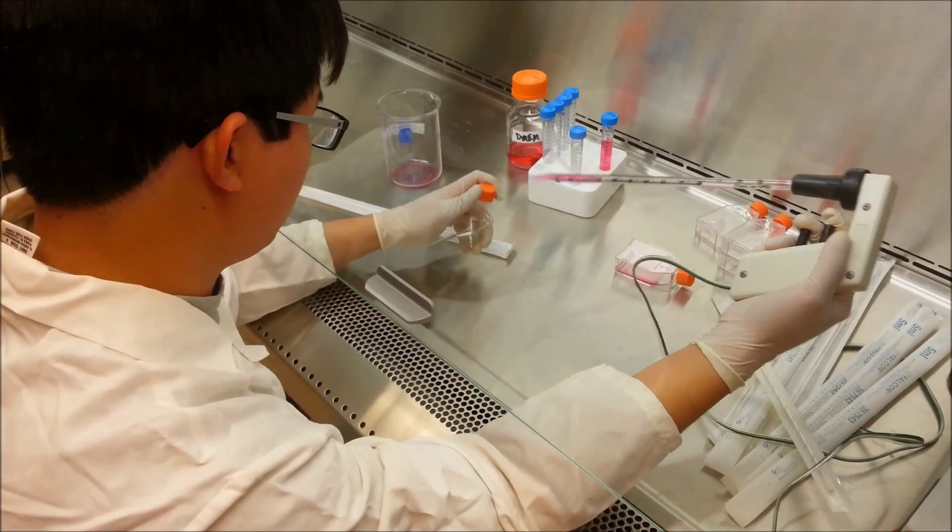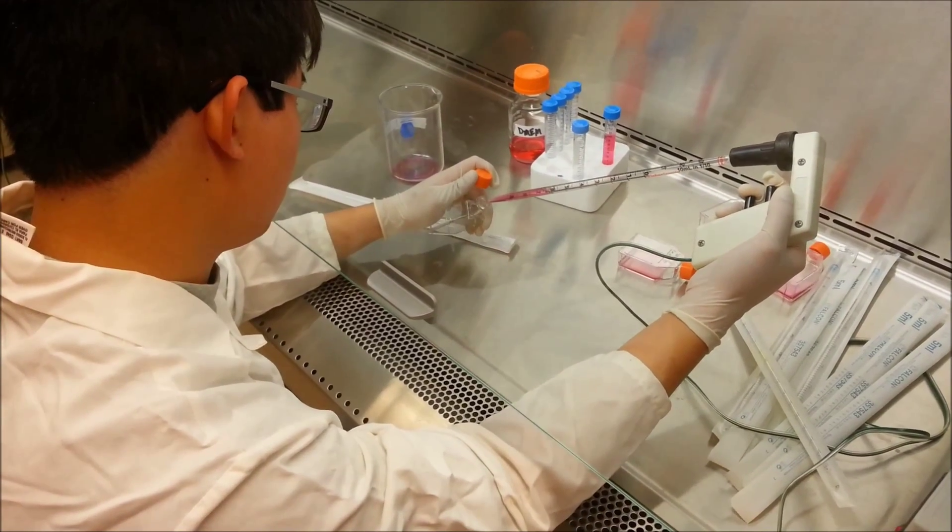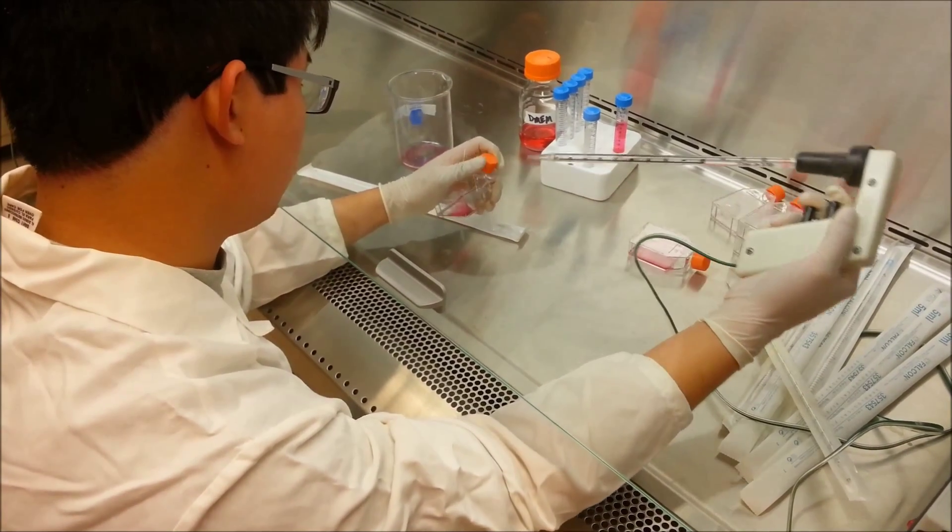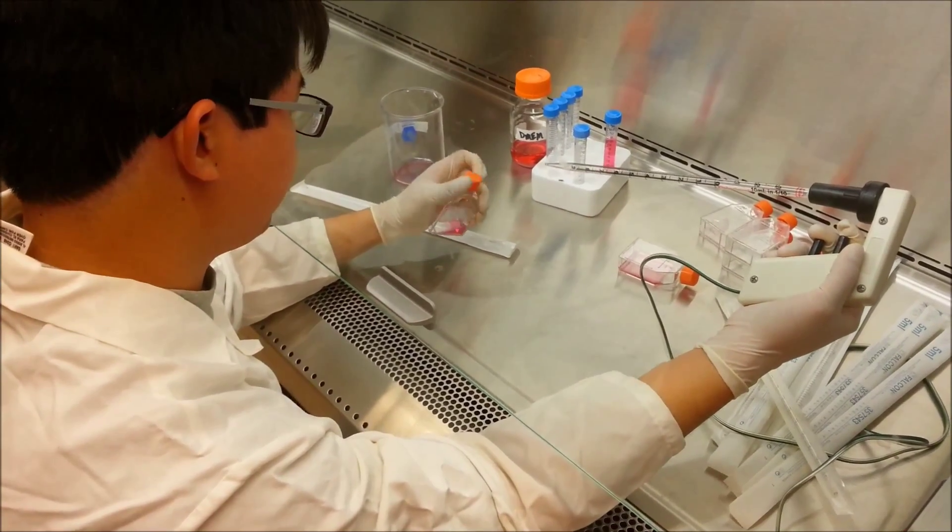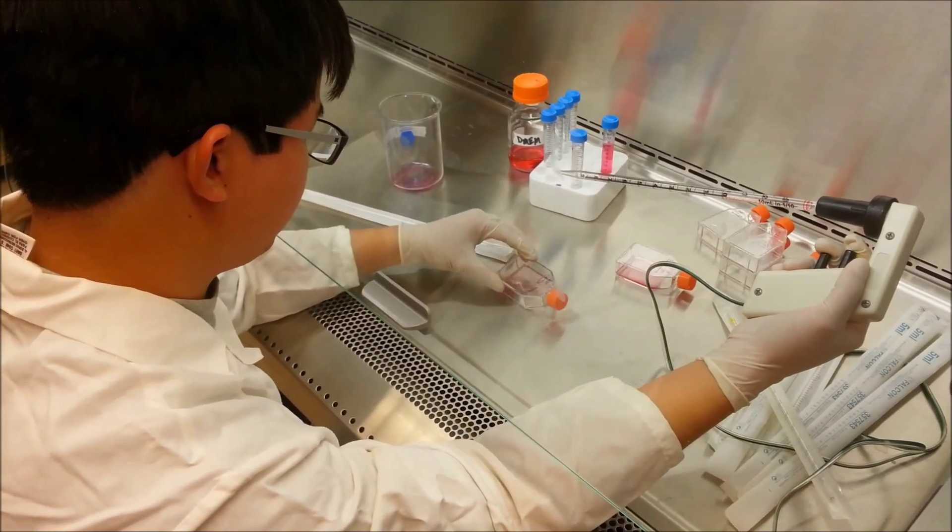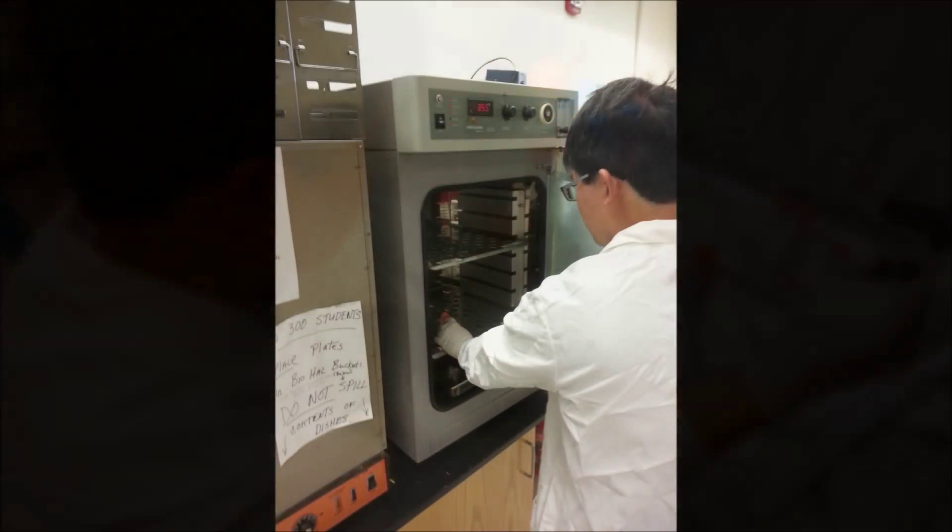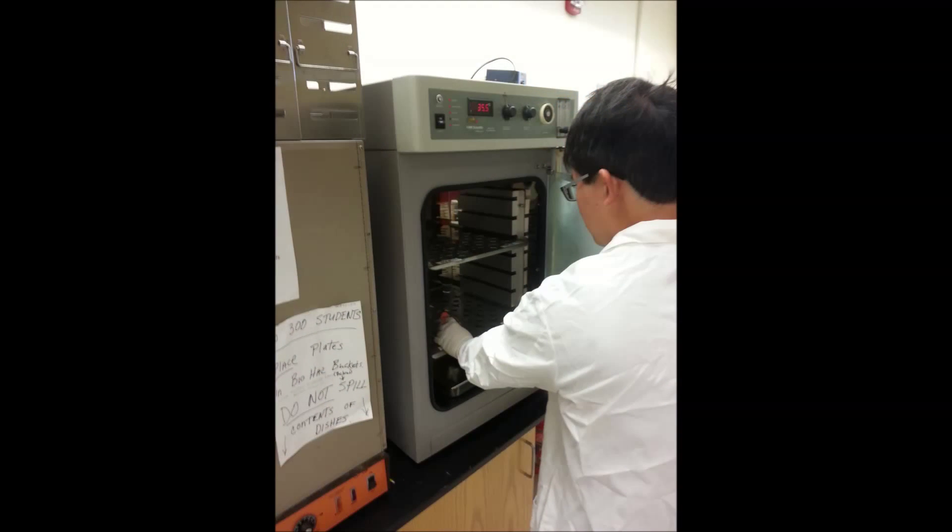Add about 3.5 mL of the new cell suspension to each of your T25 flasks, rocking them to ensure that the surface is completely covered. Place your cells in the incubator.